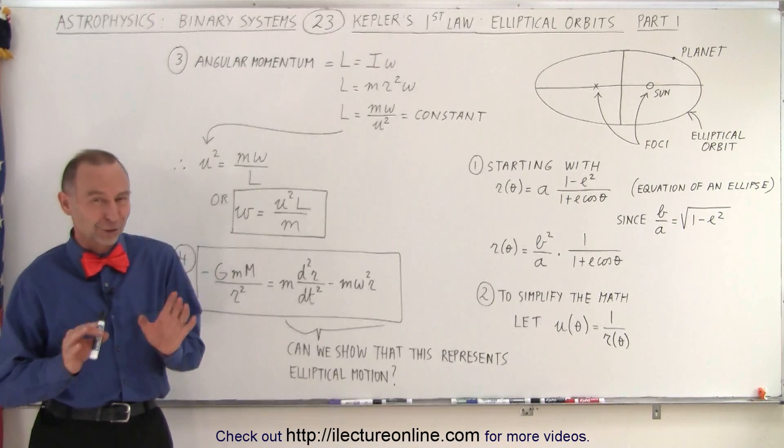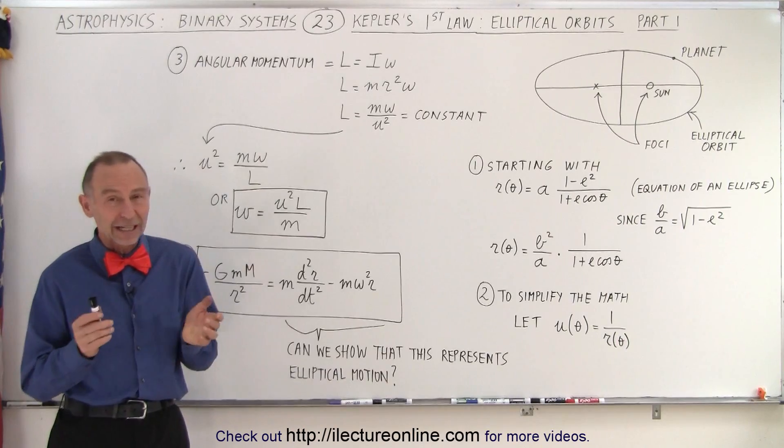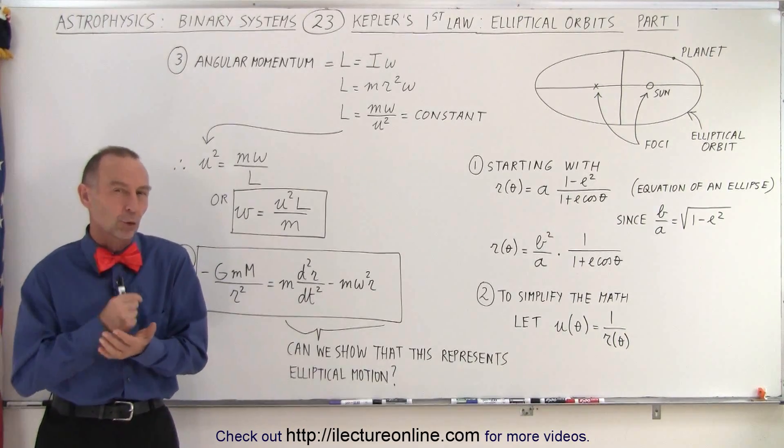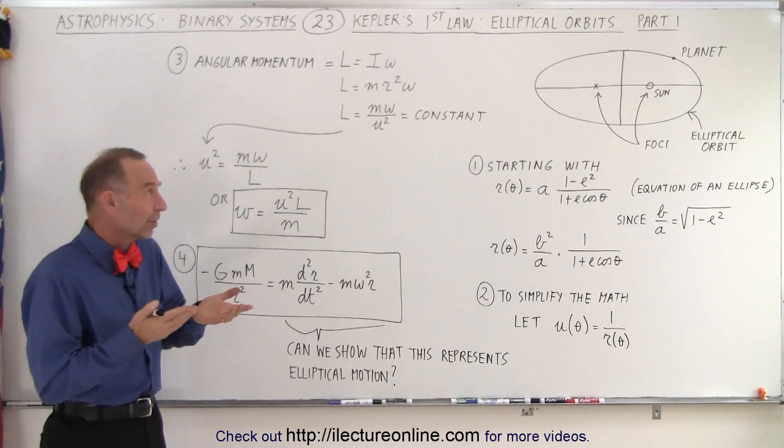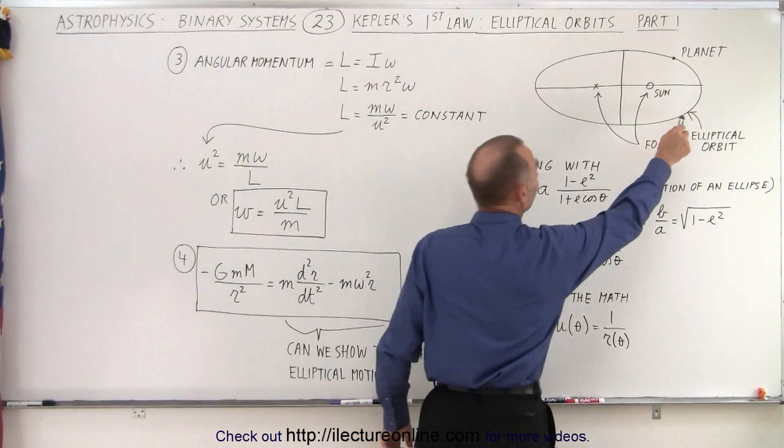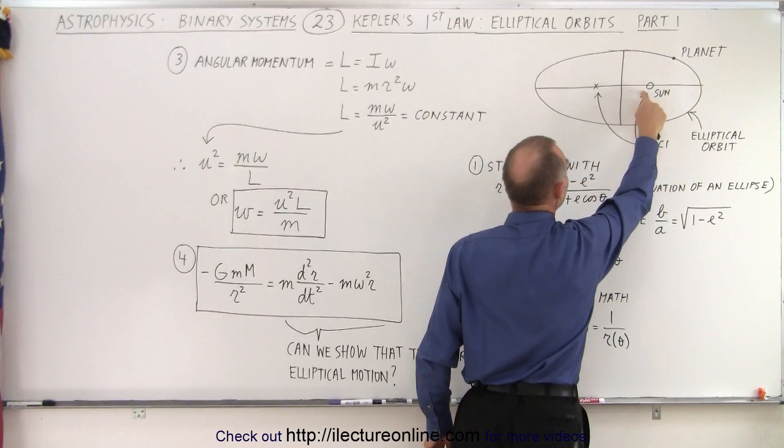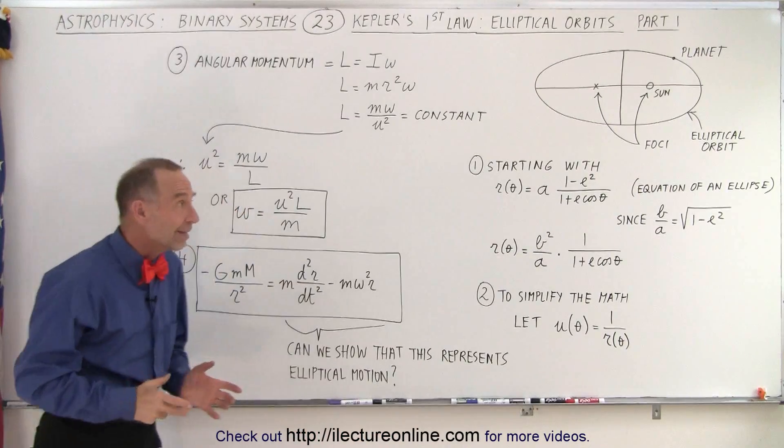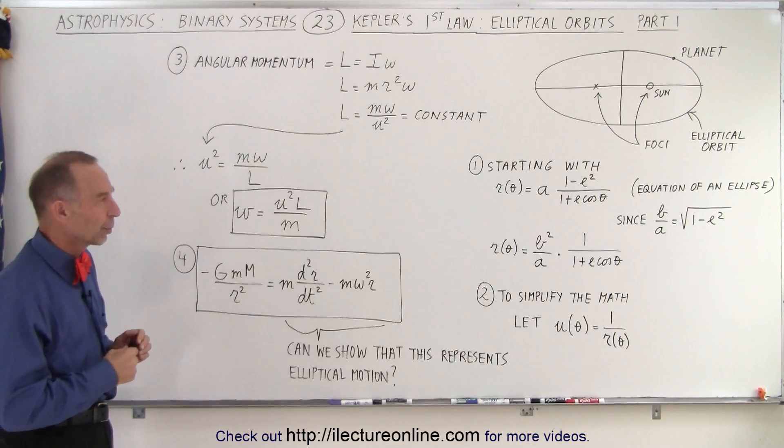It turns out it's a lot easier to look at the second law mathematically. It's essentially the conservation of angular momentum, than it is to look at the first law and show that the orbits are indeed elliptical. We're talking about the orbits of the planets around the sun. Kepler's first law states that planets move around the sun in elliptical orbits, with the sun located at one of the two foci of the ellipse. It was a very insightful law, but proving it mathematically requires more work.